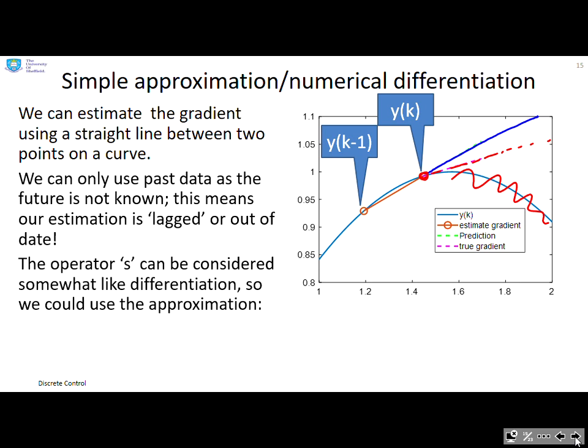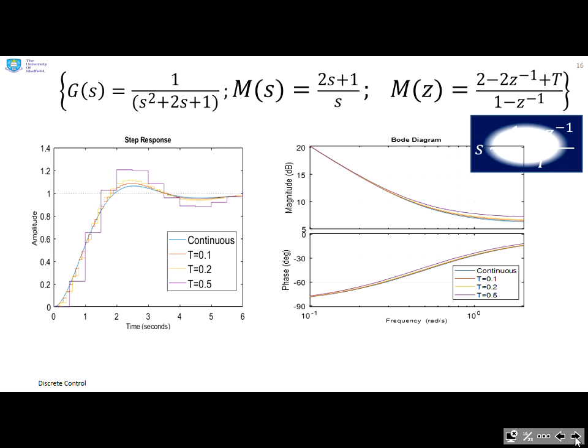Now how do we calculate the equivalent operators? So the operator s from the Laplace transforms can be considered something like a differentiator. So we can use this approximation: s is approximately (1-z^{-1})/T. Okay, so that's basically saying that dy/dt is approximately (y_k - y_{k-1})/T. So that's what I'm going to do here. I'm going to take my compensator M and I'm going to plug in this approximation here, and that gives me the discrete compensator as a function of z. And you'll notice the sampling time T comes into that compensator as well.